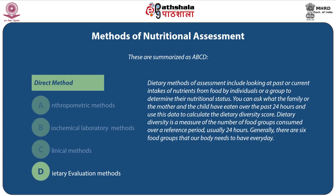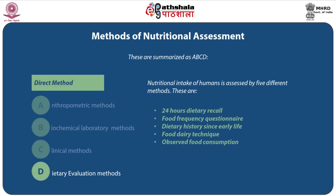Dietary Evaluation Methods include looking at past or current intakes of nutrients from food by individuals or groups to determine their nutritional status. You can ask what the family or the mother and child have eaten over the past 24 hours and use this data to calculate the dietary diversity score. Dietary diversity is a measure of the number of food groups consumed over a reference period, usually 24 hours. Generally there are six food groups that our body needs every day. Nutritional intake is assessed by five methods: 24-hour dietary recall, food frequency questionnaire, dietary history since early life, food diary technique, and observed food consumption.